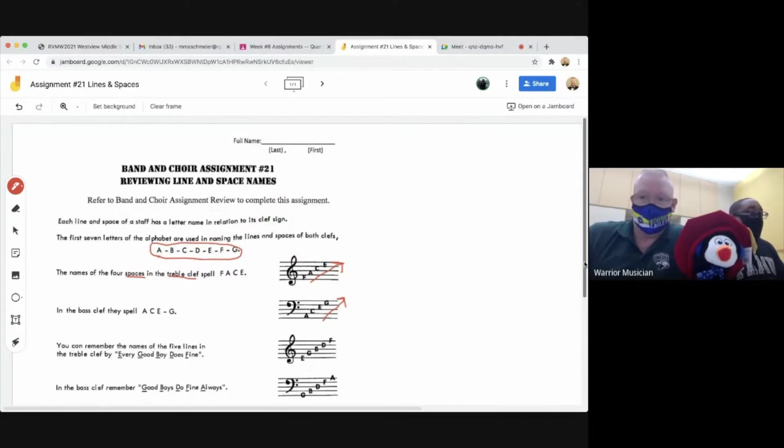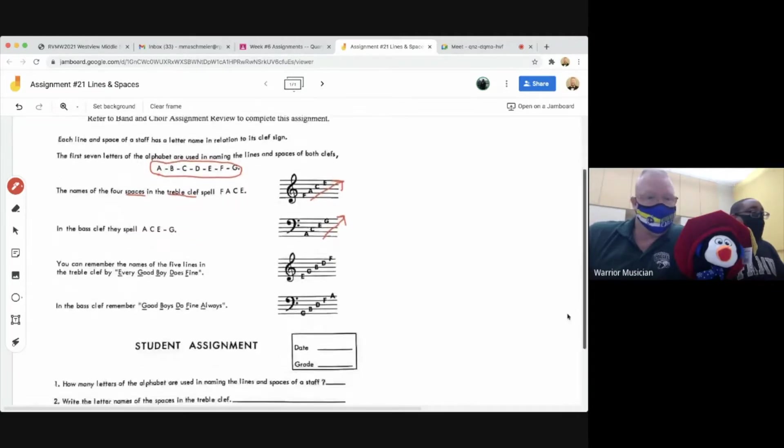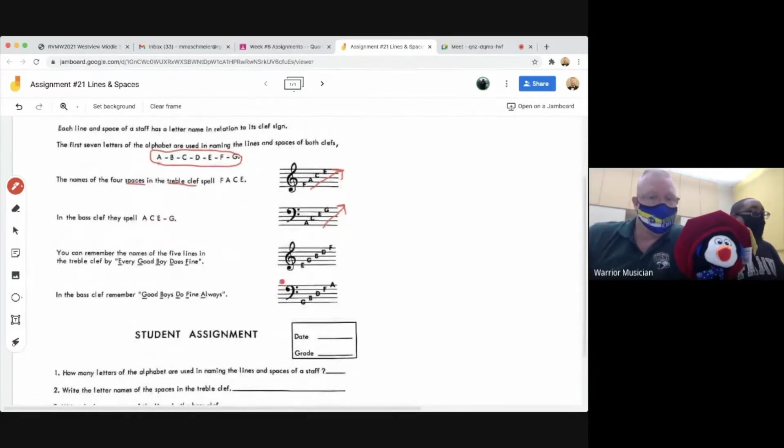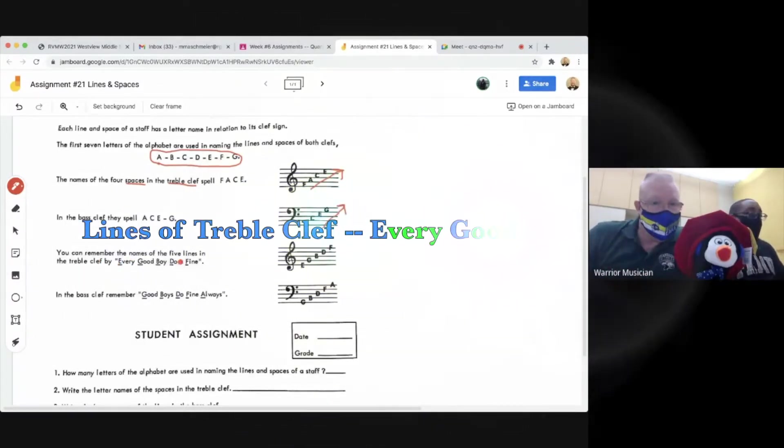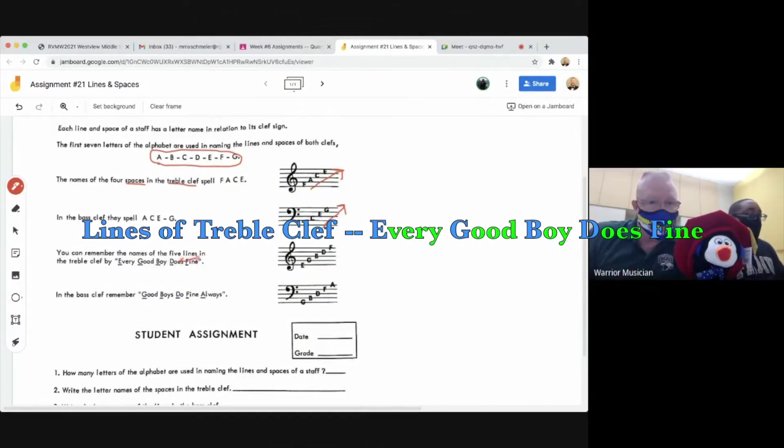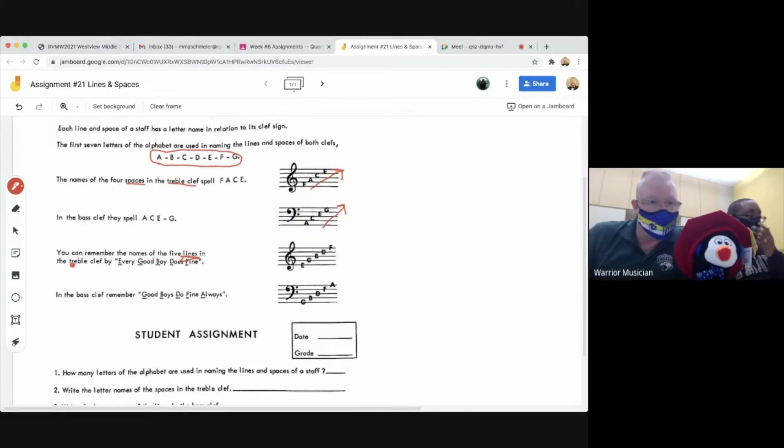Now we're looking at lines for the treble clef. So you can remember the names of the five lines in the treble clef by memorizing this phrase: every good boy does fine. Again, lines and treble clef are the very important two words of that sentence.